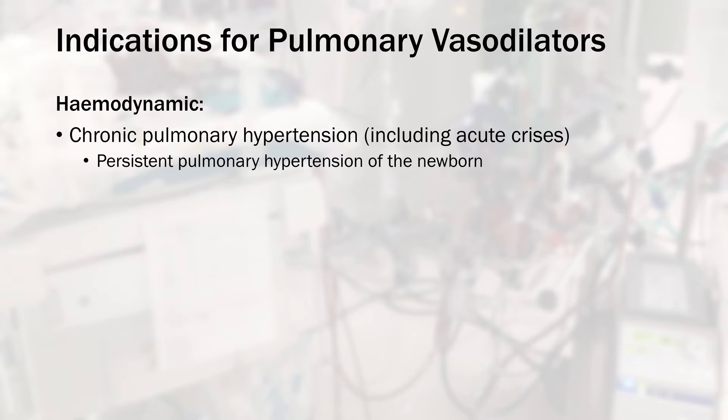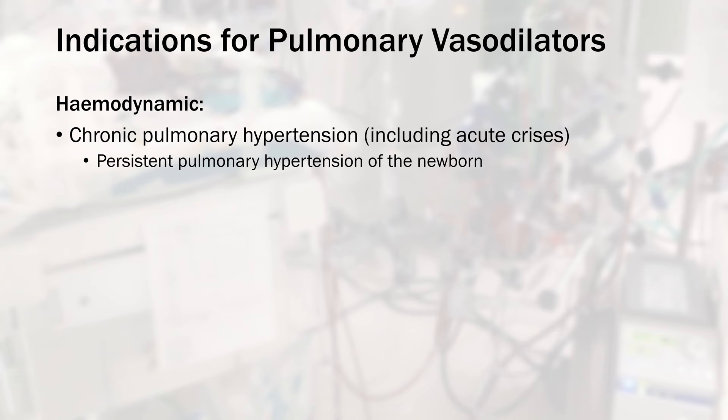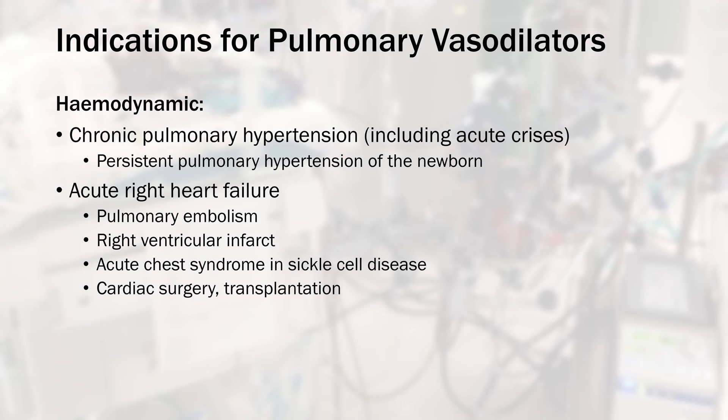Other uses are far less evidence-based because no one's bothered to study it, but they include acute right heart failure due to PE, MI, sickle cell disease, as well as some cardiac surgery and transplantation. Finally, some inhaled pulmonary vasodilators can be used for hypoxic respiratory failure, but that topic is a little bit more complicated than you might think.